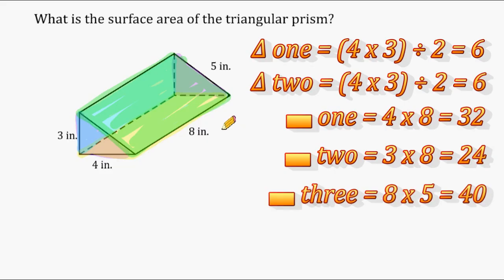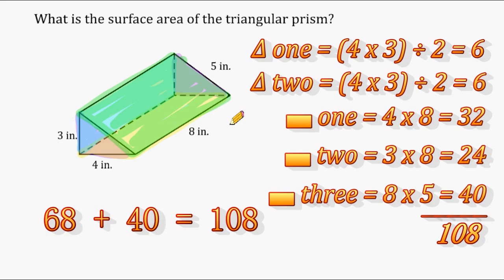Alright, now that we know the area of all surfaces, let's go ahead and add them together to get our total surface area. So we have 6 plus 6, which is 12. And then we have to add 12 to 32, which is 44. And then 44 plus 24 more is 68, and 68 plus 40 more is 108. So the total surface area of this triangular prism is 108 square units.